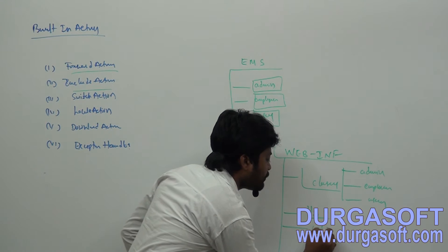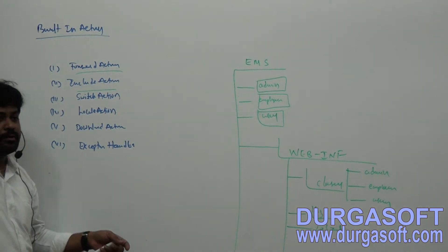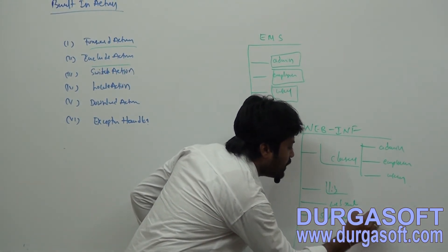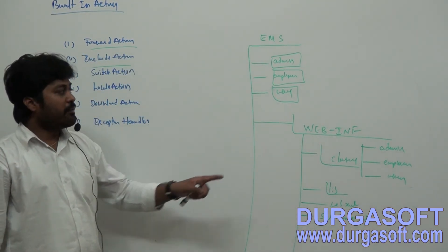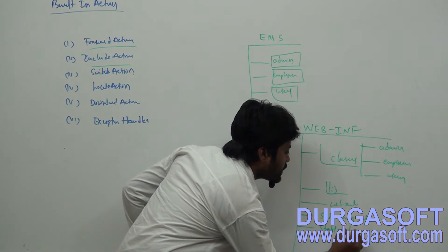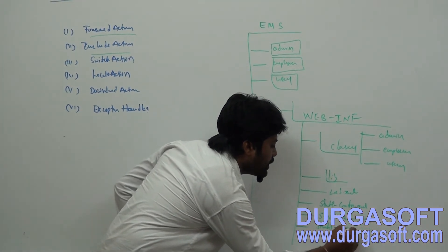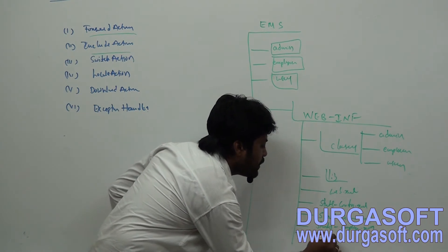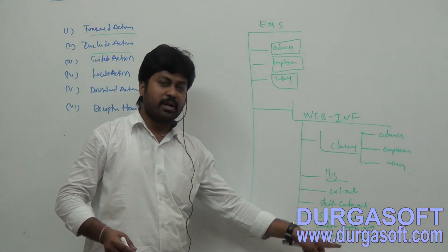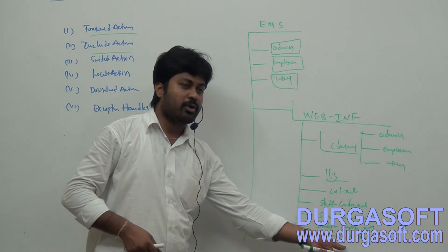For the default module, you configure struts-config.xml. For each additional module you need a separate XML file: struts-admin.xml for admin, struts-employee.xml for employee, and struts-user.xml for user. So for each module you maintain one XML file — one for the default module and one for each particular module.